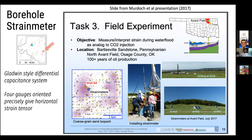Just a word about the strain meter we're using. On the map, you can see this particular strain meter is about 40–45 kilometers away from the actual monitoring well. This is a Gladwin-style differential capacitance system with four gauges oriented precisely, which can be combined to give the horizontal strain tensor. These are sampled up to 20 Hz, so we can use them in the seismic band. This is a screenshot from a presentation by Larry Murdoch — these strainmeters were set up at an analog CO2 injection site in Osage County to measure signals related to injection for geomechanical modeling. We're effectively repurposing them for this study.